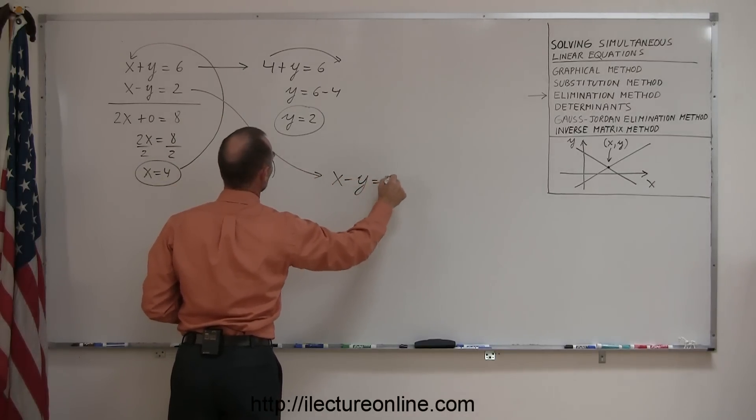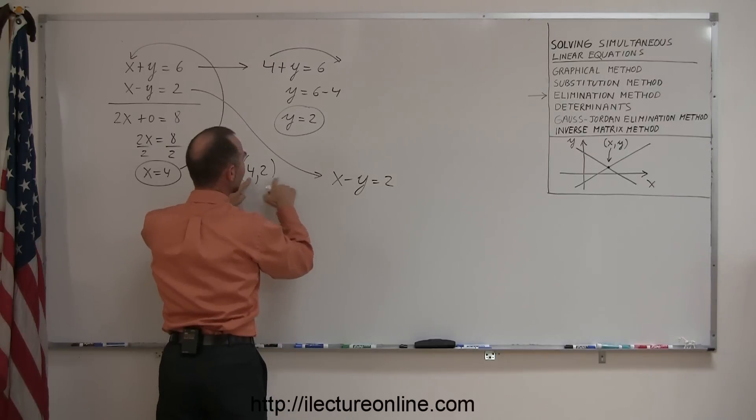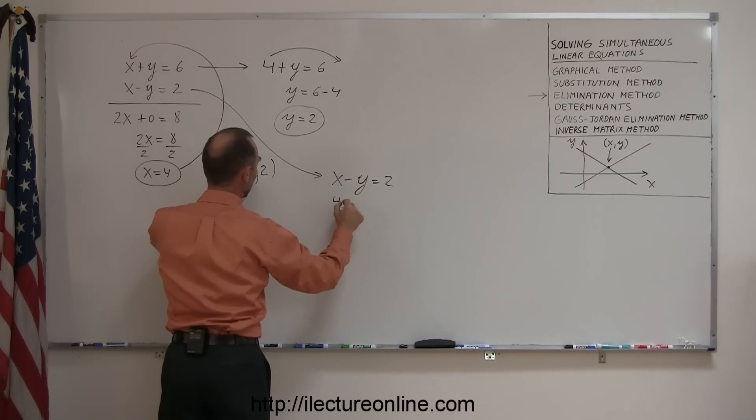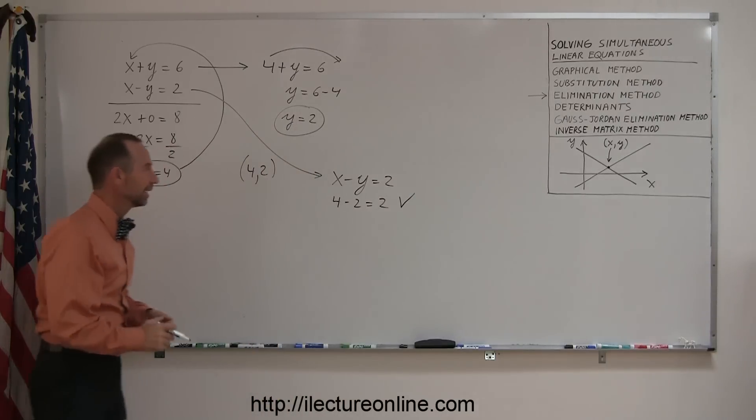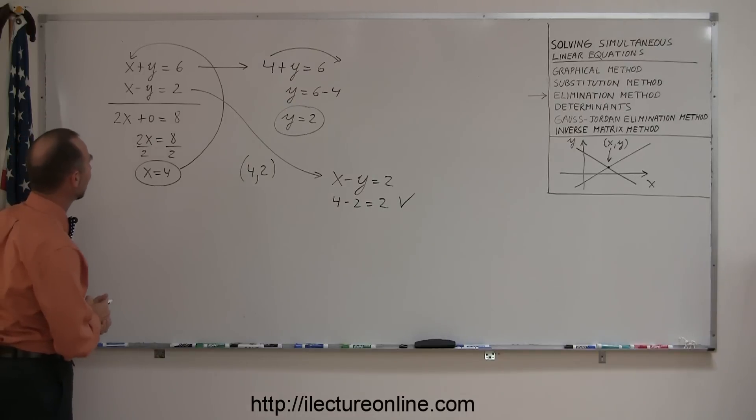x minus y equals two. I'm going to plug the x and the y value in here. So we have four minus two. Is that indeed equal to two? And the answer is yes. So just to make sure, it's not a bad idea to go ahead and check the answer by plugging the two points into the second equation.